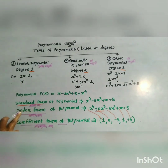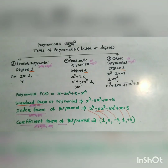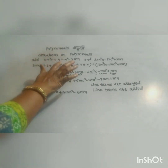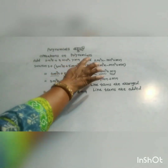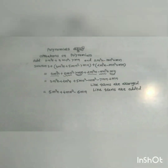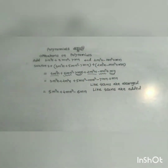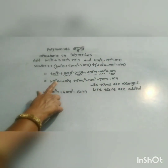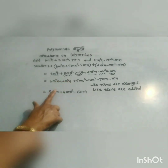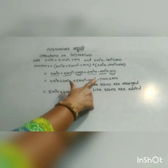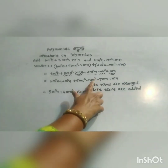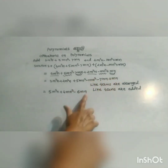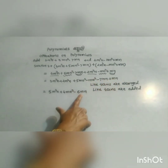Standard form of a two-variable polynomial: given 1 plus 5mn squared minus 7mn and 2m squared n minus mn squared plus mn. Arranging like terms: 3m squared n plus 2m squared n equals 5m squared n; 5mn squared minus mn squared equals 4mn squared; negative 7mn plus mn equals negative 6mn.